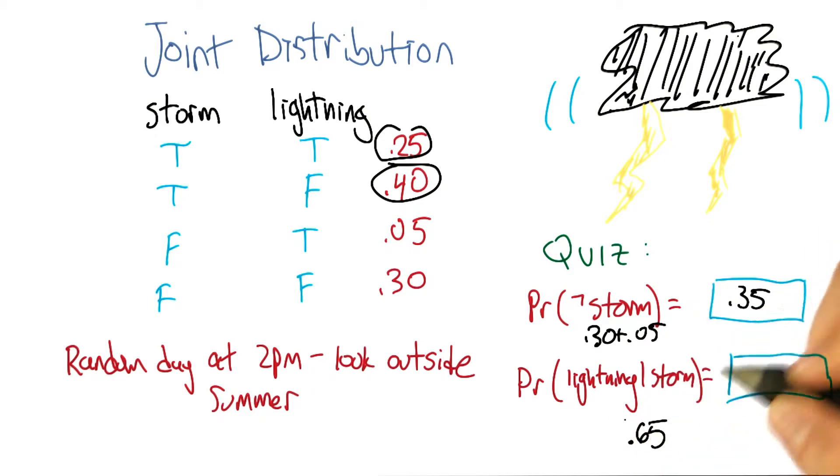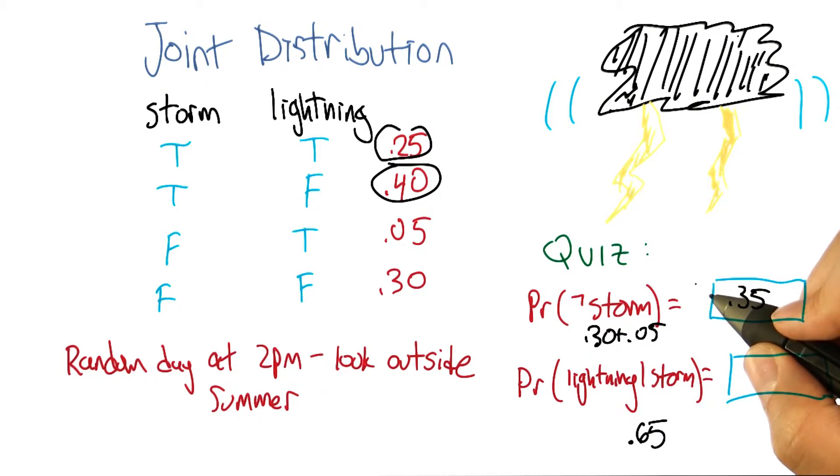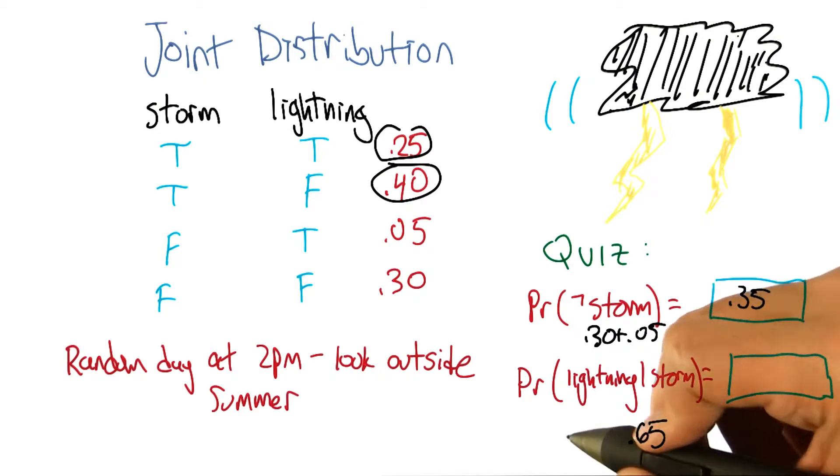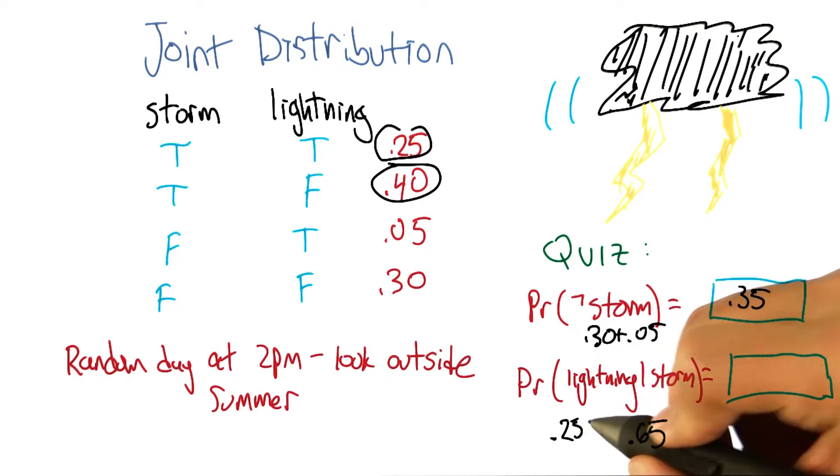But that's not the probability of there being lightning, given there is a storm. So of those two cases, there's only one where lightning is happening when storm is happening. And that's 0.25. But 0.25 isn't enough because it's only 0.25 out of 0.65. So the correct answer would be 0.25 divided by 0.65, which is some number.